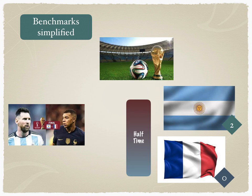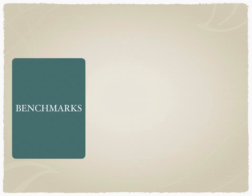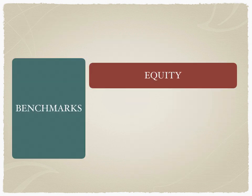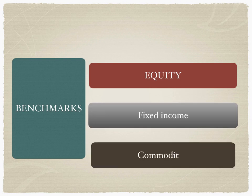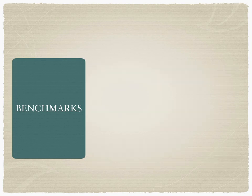In India, we love to watch cricket matches. The cricket score, the wickets taken, the runs scored — these are the benchmarks. So it's not an absolute scoring system; benchmarks are a relative method of scoring. Benchmarks could be based on equities, fixed income, or commodities, and every one of them has its own unique benchmarks.